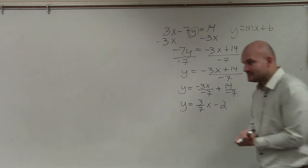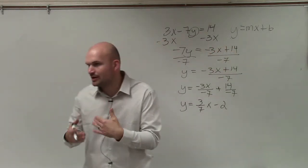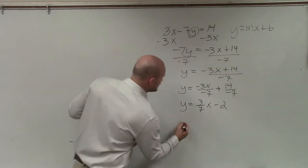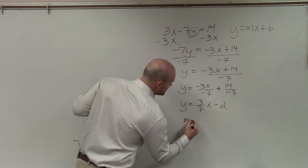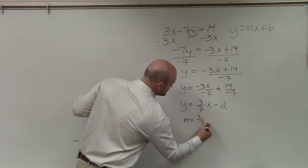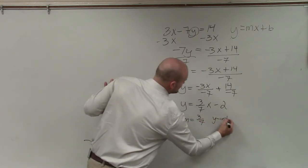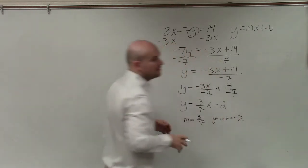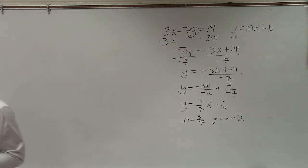And the reason why we did this is because we're going to prepare ourselves for graphing. So the last thing I want you guys to write in is the slope is 3/7, and the y-intercept is equal to negative 2. So once you write it in the slope-intercept form, you're now going to have to identify what the slope is and what the y-intercept is.